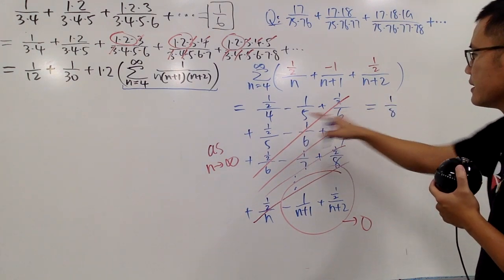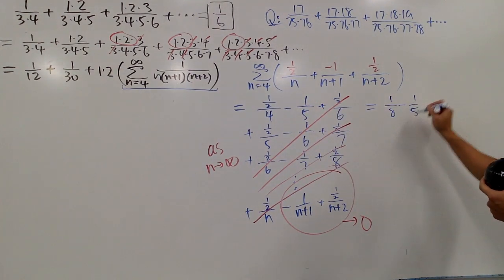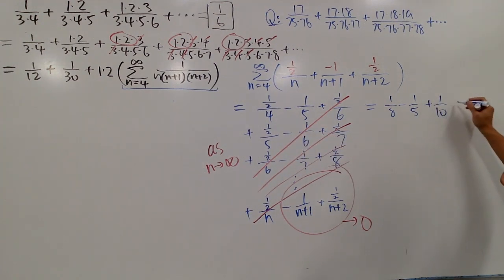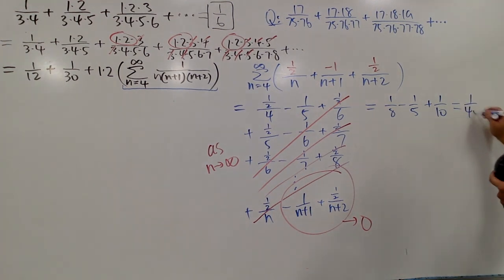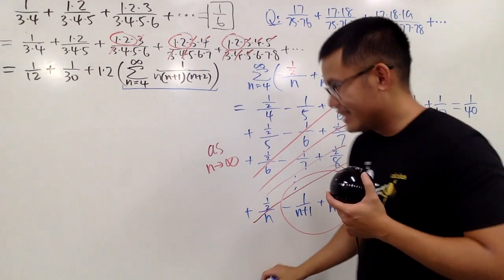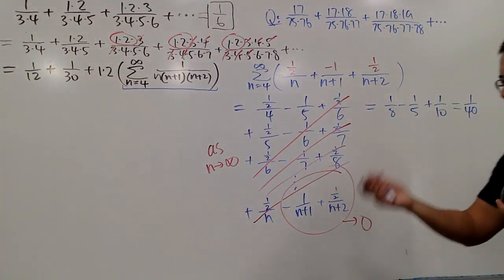So we have one over eight, minus one over five, plus one over ten. Work this out, we will get one over forty. Right? So this is, of course, just get the fractions done, like that. And now, we can come back here and use this result to help us out.